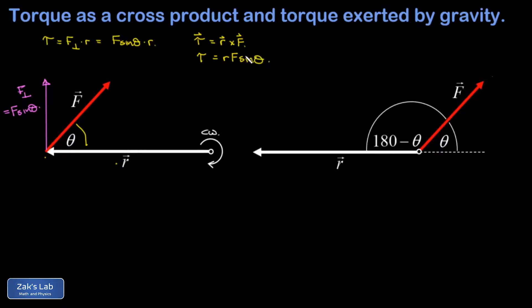We still get the same magnitude of torque from this equation, but the cross product has an extra piece of information: it has direction. This is torque as a vector, and the direction is given by using what's called a right-hand rule.